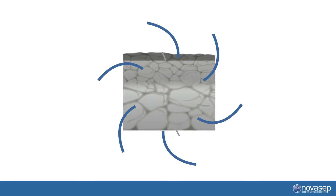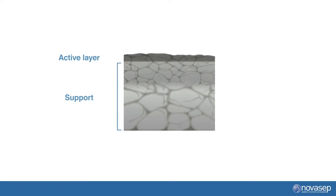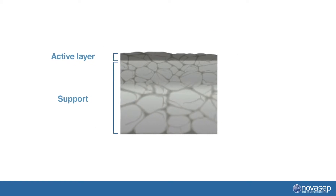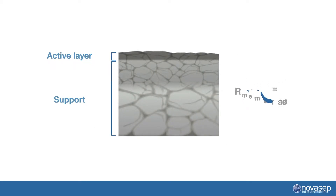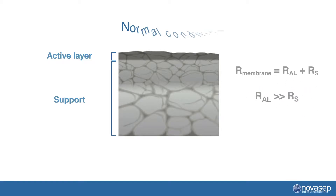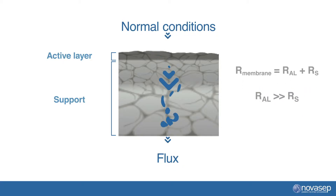One needs to take some precautions before back pulsing to prevent damage to the membrane. As you can see, overall membrane resistance is a combination of the active layer membrane resistance and the support resistance. Active layer resistance to flux is much higher than support layer resistance, as the material is much denser at the active layer.